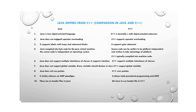Sixth, Java does not support multiple inheritance of classes but supports interfaces, whereas C++ supports multiple inheritance of classes. Seventh, Java does not support global variables — every variable must be declared within a class. In C++, global variables are supported. A local variable is declared within a function, while a global variable is declared outside the main function. Java does not use pointers, but C++ supports the pointer concept.